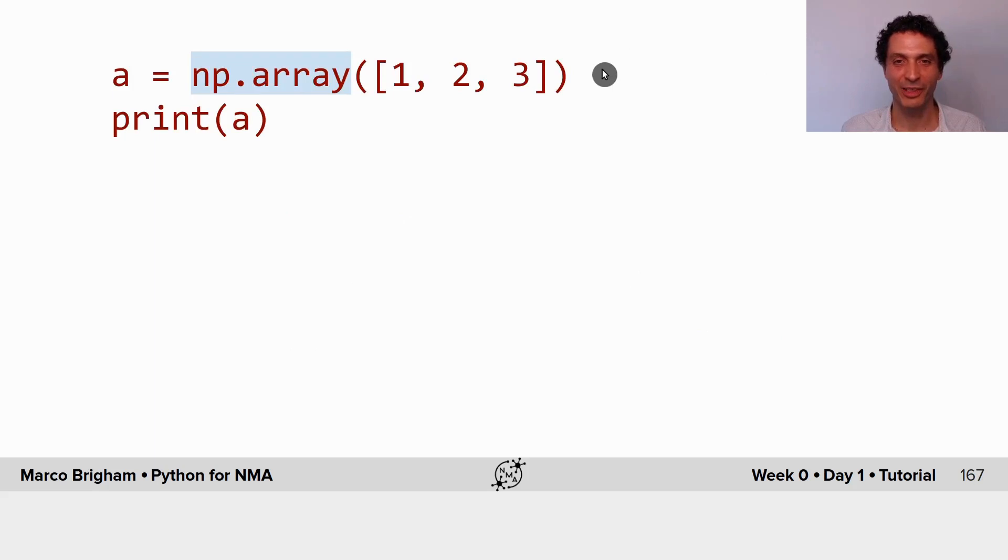This is how you instantiate them, using the command np.array, and then in the argument you give a list. So this will instantiate a NumPy array with integers 1 to 3.